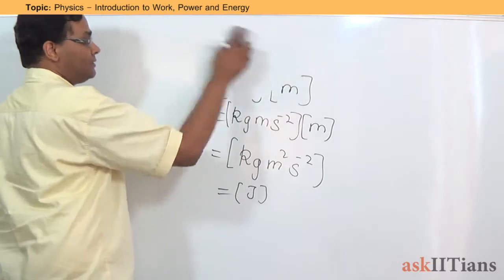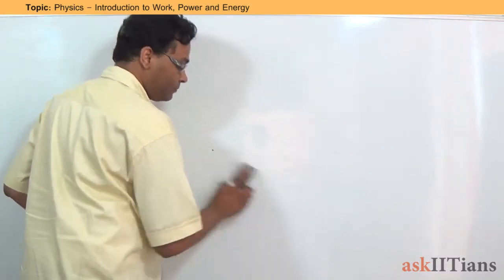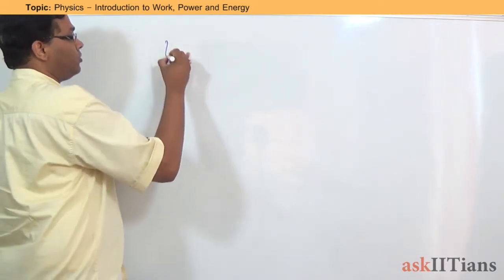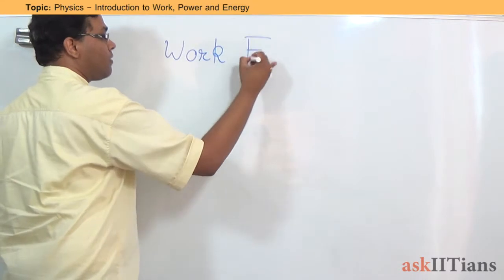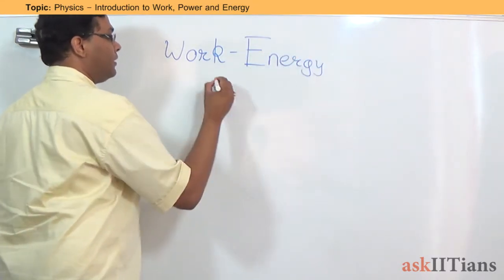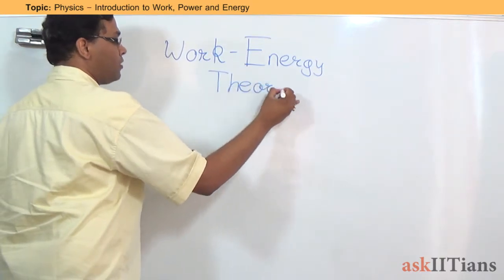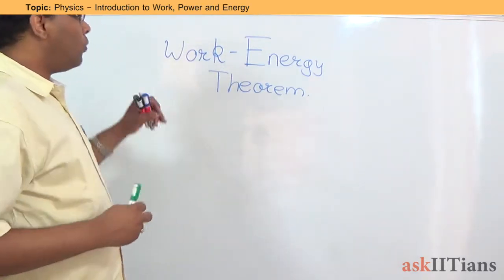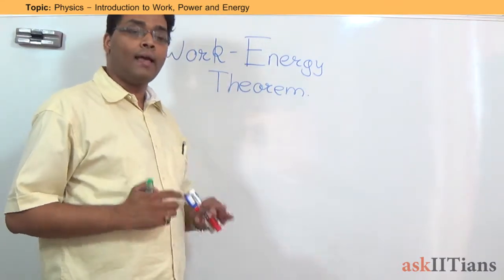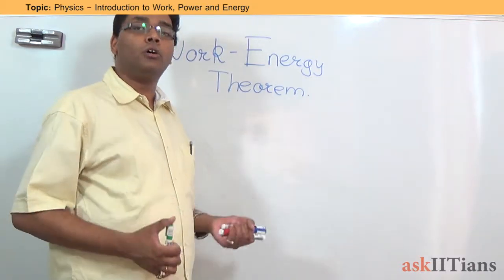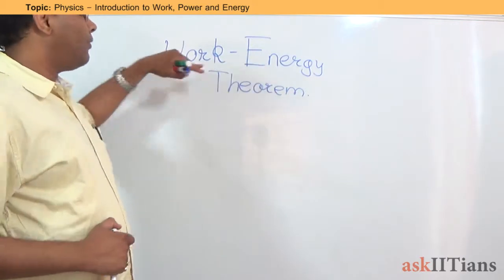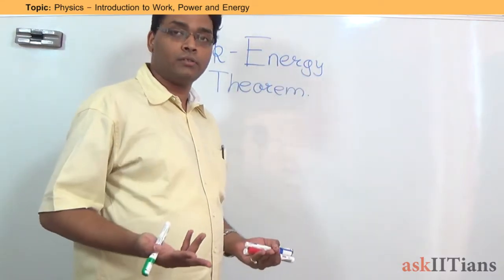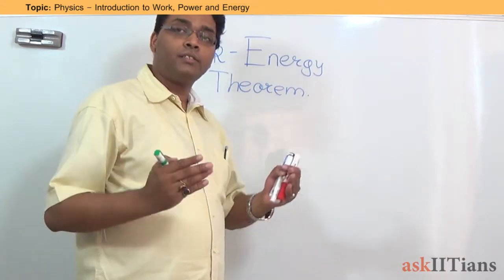The next topic is what is known as the work-energy theorem. What exactly is the work-energy theorem? Work is when you apply a force on an object and the object starts moving with some velocity, or there is a distinction in its state. Energy: when work has been done by an external force, that results into a storage of energy. So work is done by an external system, and energy is stored within the body.